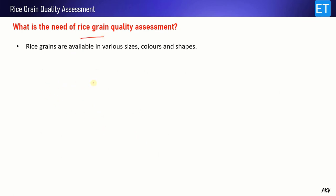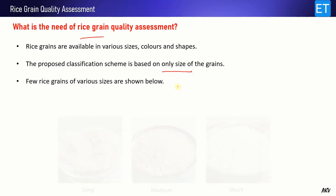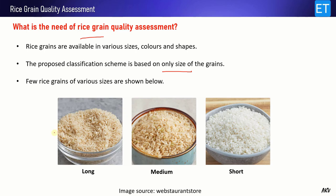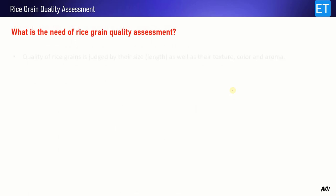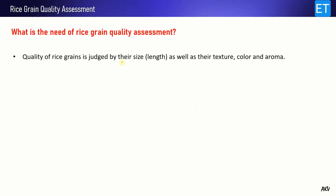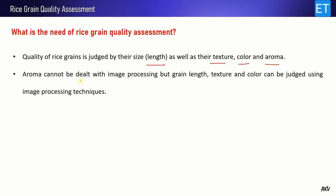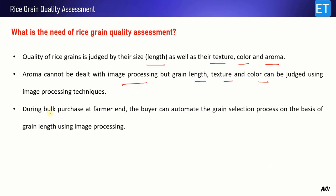Let's first see what is the need for rice grain quality assessment. We have rice grains of various sizes, colors, and shapes, and the proposed classification scheme is based only on the size of the grains. Rice grains come in different lengths — long grains, medium grains, and short grains. The quality of rice grains is mainly judged by their length, but we also look for texture, color, and aroma. Aroma you cannot deal with using image processing, but length, texture, and color can be judged using image processing techniques.